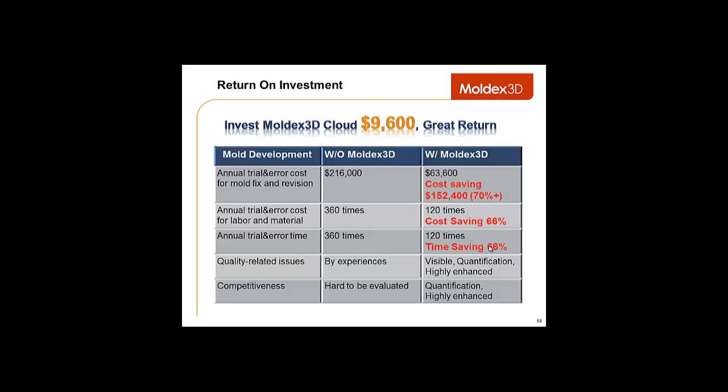Now, here's another example. On the left side of the chart, we can see the annual cost for mold fix and revision. With Moldex 3D, that cost can be reduced by 70% or more. For labor and material, the cost savings is 66%, and for annual trial and error time, that is also reduced by 66%.